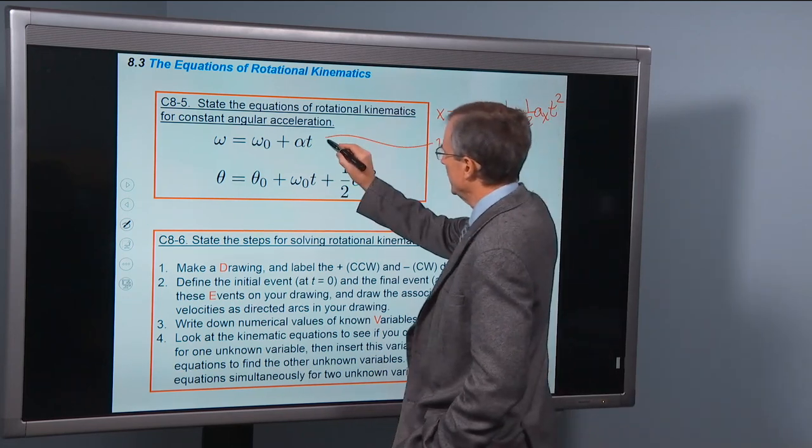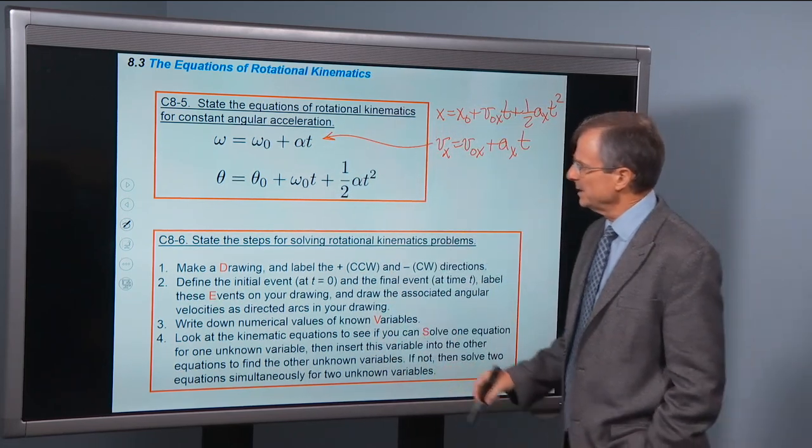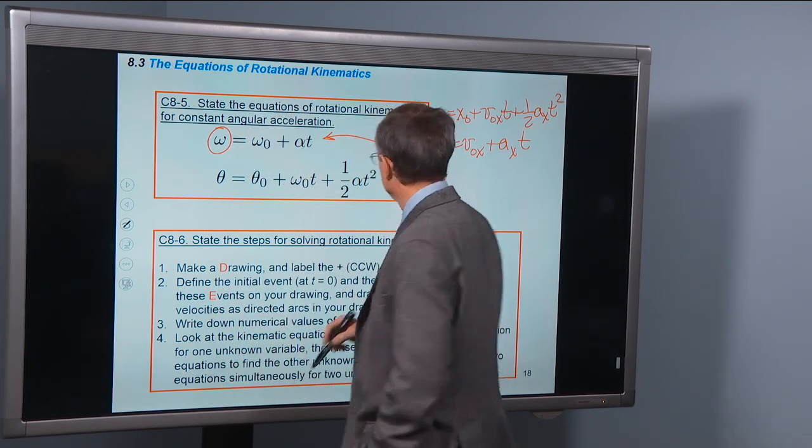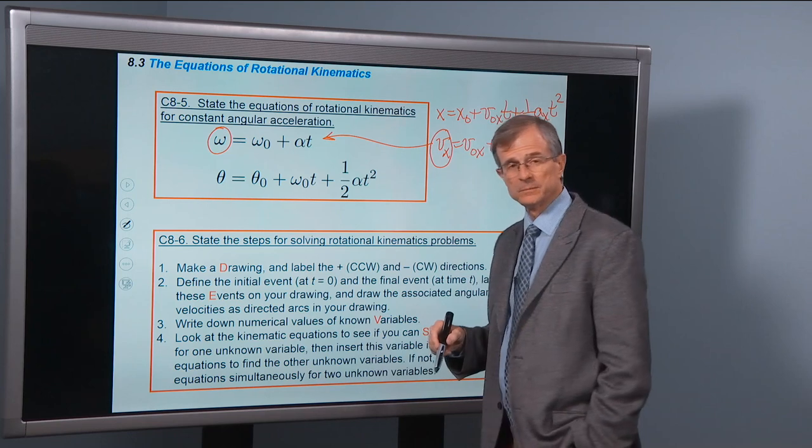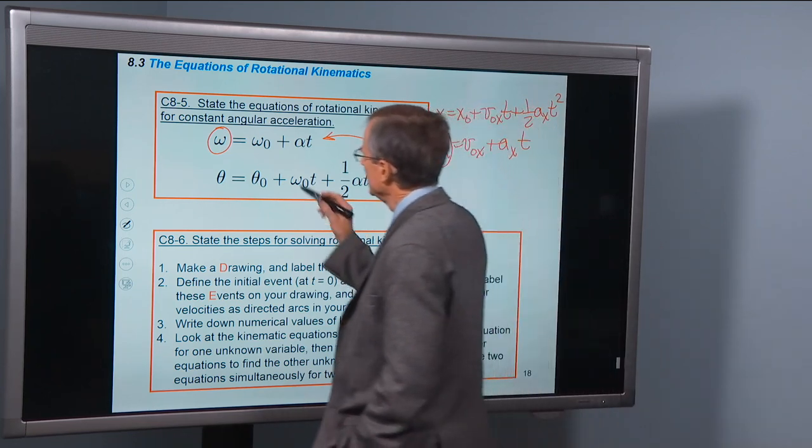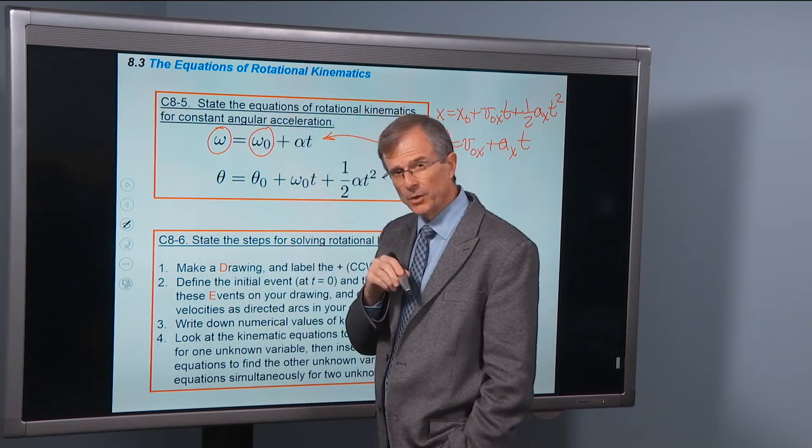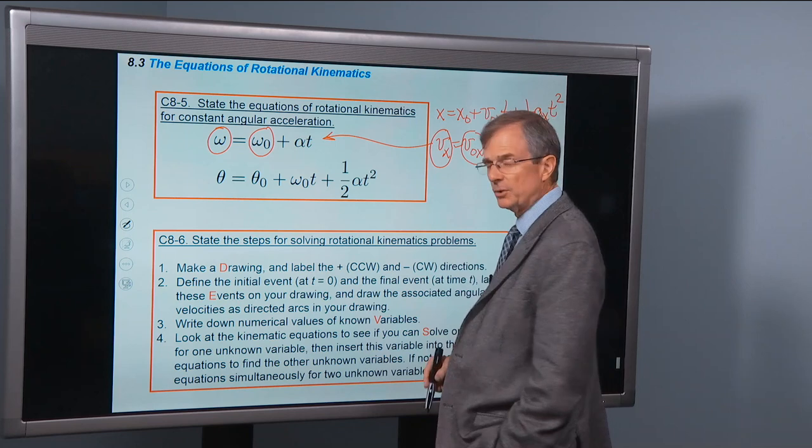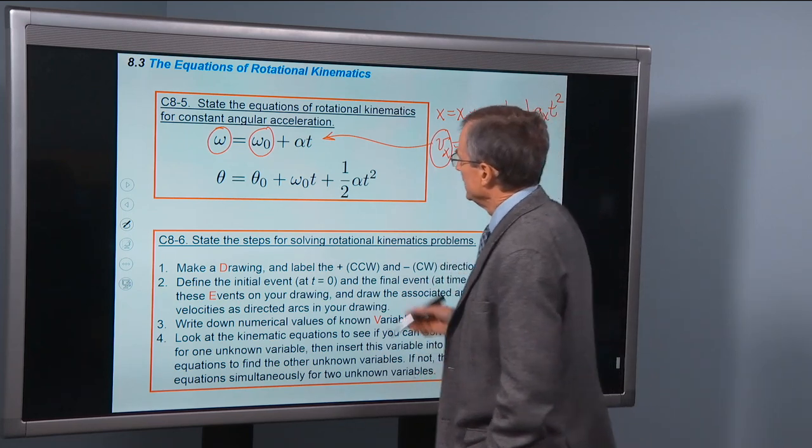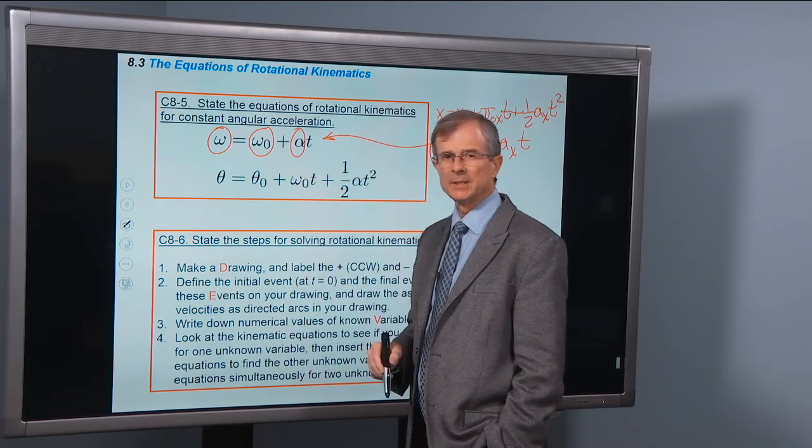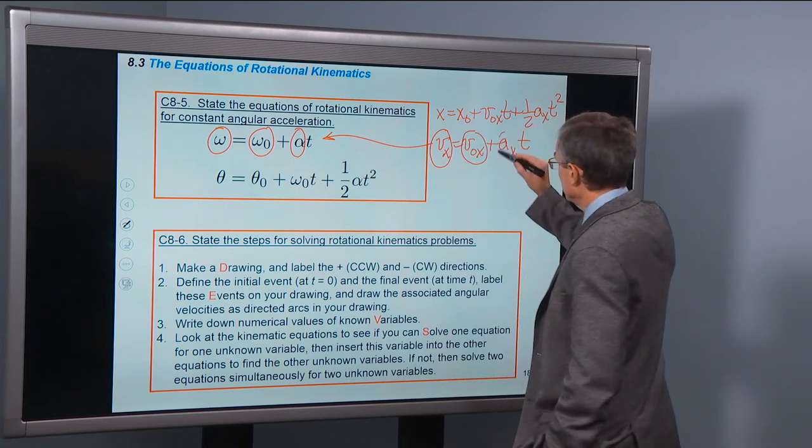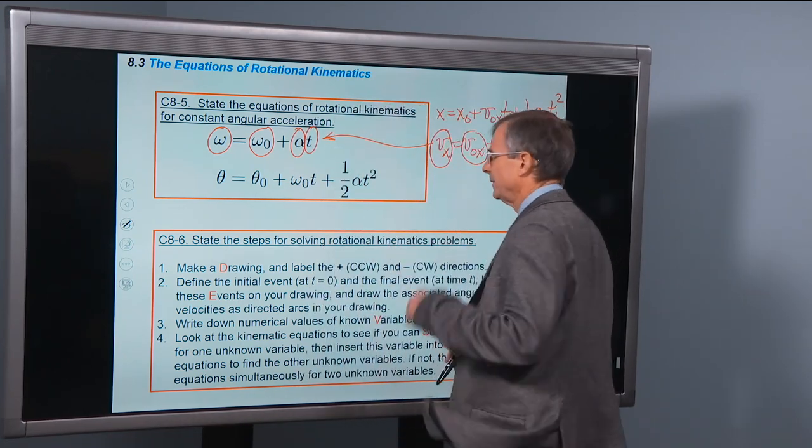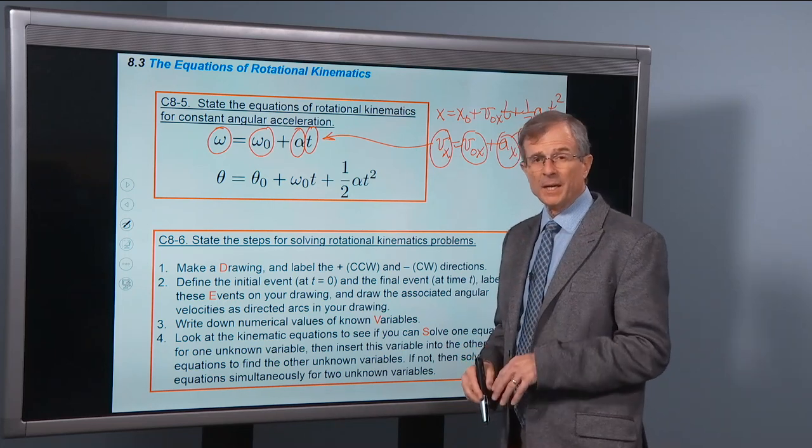This equation here, the velocity equation, the rotational equivalent is this equation. This is the final angular velocity, which is analogous to the final regular velocity vx. This is the initial angular velocity, which is analogous to the initial velocity. This is the angular acceleration, which is analogous to the regular linear acceleration ax, and t is obviously the same thing. omega equals omega0 plus alpha times time.